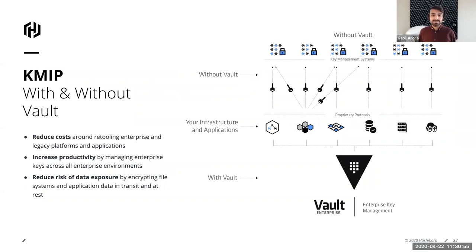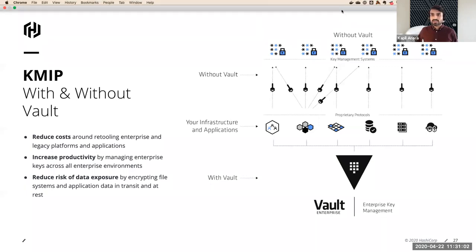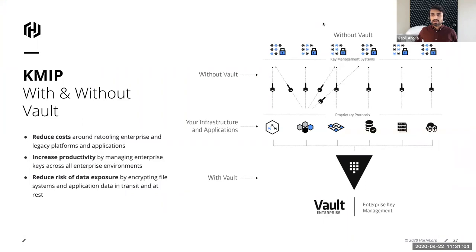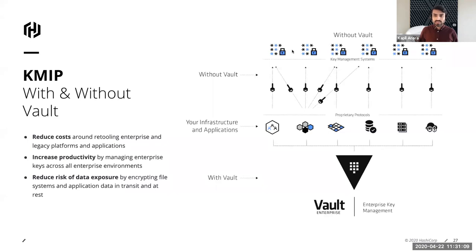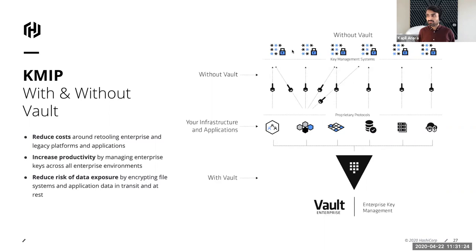On top of that, you can have multi-tenancy. Vault offers namespaces, so you can have different organizations within Vault, and these organizations or departments can have their own KMIP servers. That enables Vault to be the central service used by different departments. All these features enable full disk encryption and transparent data encryption, which has been traditionally implemented in organizations and can now be integrated into Vault. This shows the real value of Vault: instead of having different key management systems with different keys floating around, you can consolidate to one central service and manage all those keys from one place.